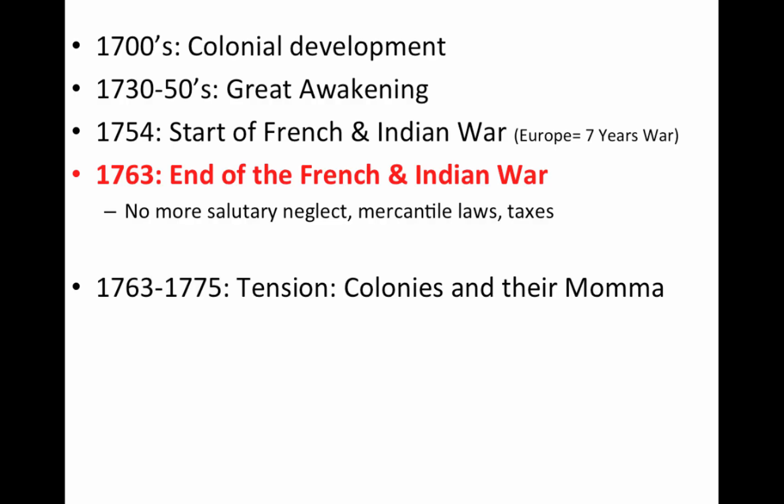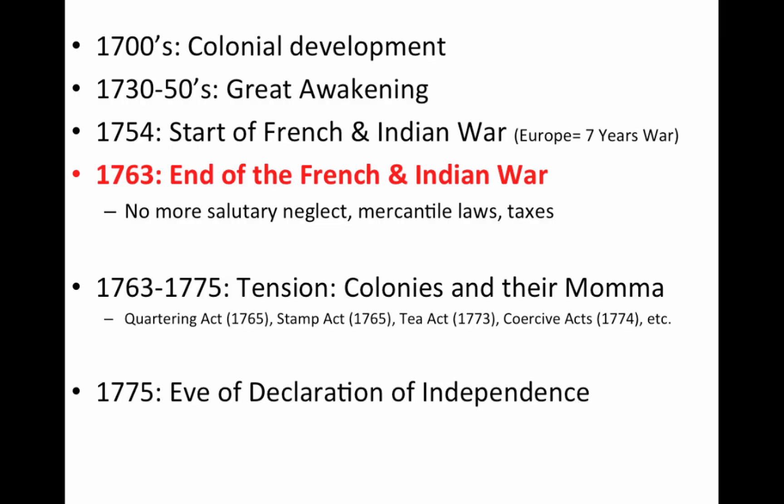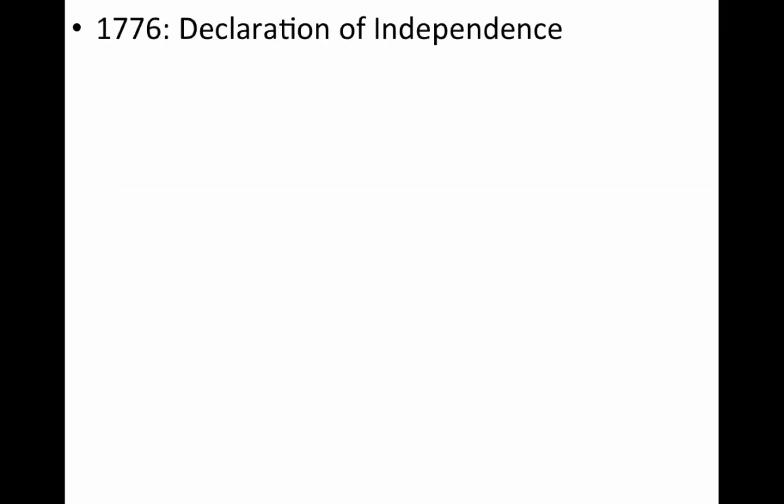1763 to 1775 is really a period of a lot of tension between the colonies and Britain. You're going to see the Quartering Act, the Stamp Act, the Tea Act, the Coercive Acts — just know they're all going on during this time of 1763 to 1775. 1775, we are on the eve of the Declaration of Independence. The fighting actually begins before we declare independence at Lexington and Concord. And of course, 1776 — that's why we eat the hot dogs and shoot off the fireworks. Earlier in the year, you have Thomas Paine's Common Sense.